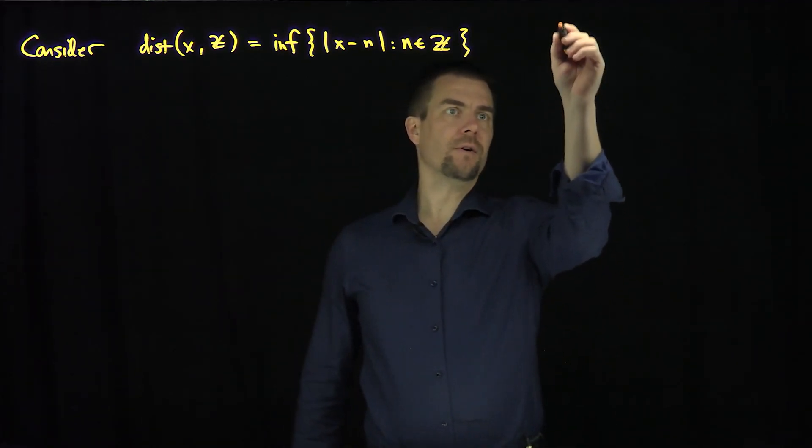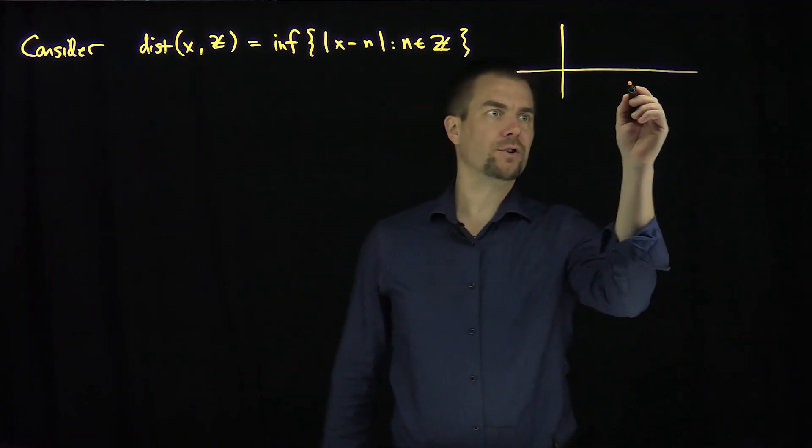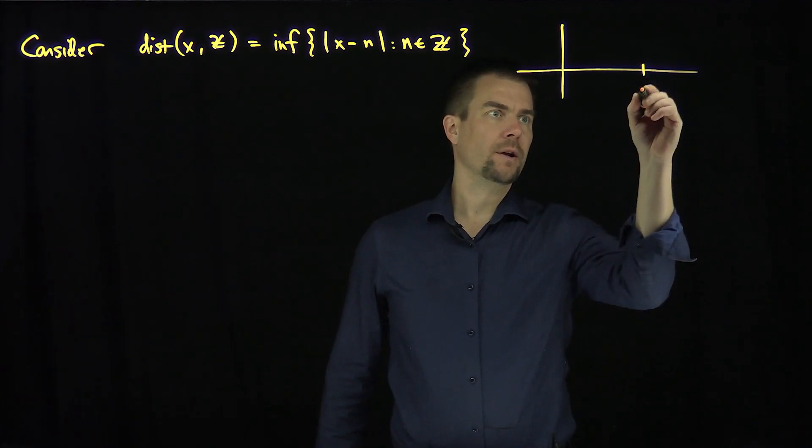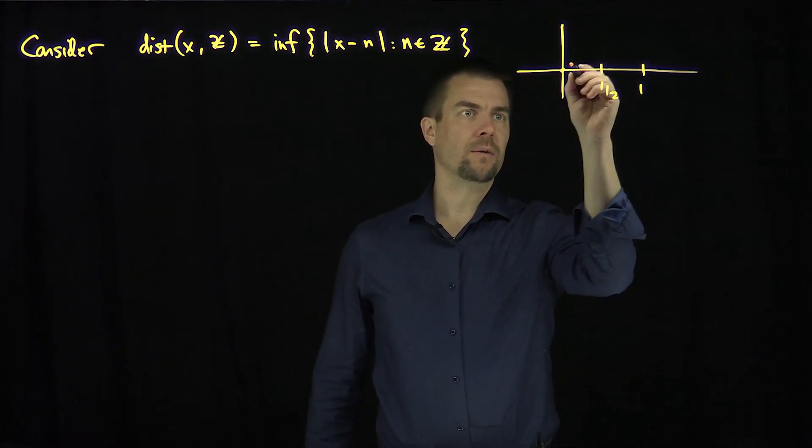And so we can see this function is a periodic function, so we can actually just draw it over one period. So here's one, here's one half, and then here is zero.